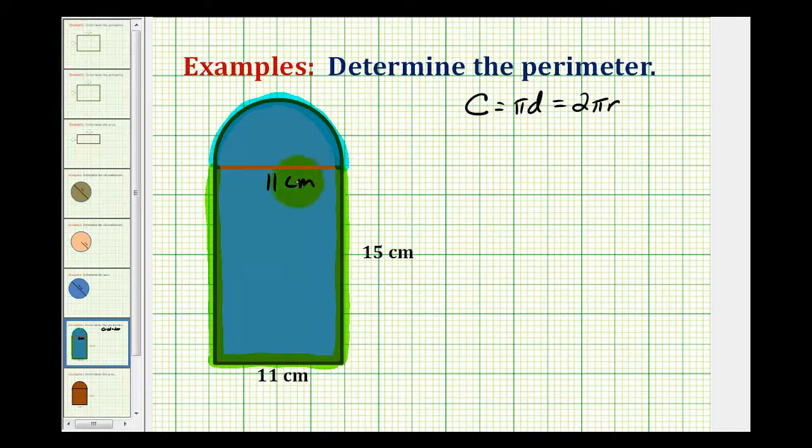And since we're given the length of the diameter, we're going to go ahead and use this first formula. So the perimeter of this figure is going to be equal to half of the circumference of a circle, where the diameter would have a length of 11 centimeters. So we'd have pi times 11 centimeters divided by two.